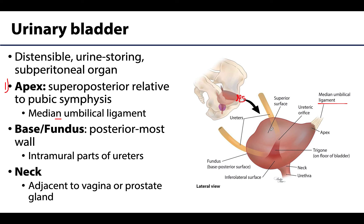The base, sometimes referred to as the fundus of the bladder, is its posterior-most wall, and it is here that the intramural parts of the ureters will enter into the bladder. Lastly, the neck of the bladder is inferiorly placed and is almost completely fixed, meaning there should be very little movement or change in shape of this portion unless there is a change in the muscles or ligaments around this area, which can affect urinary continence.